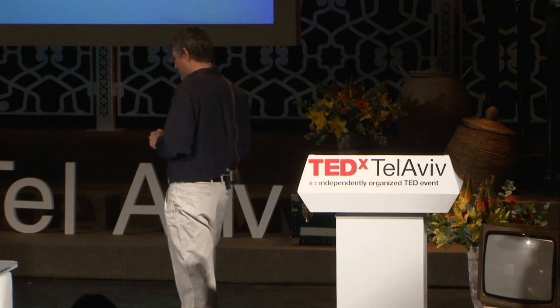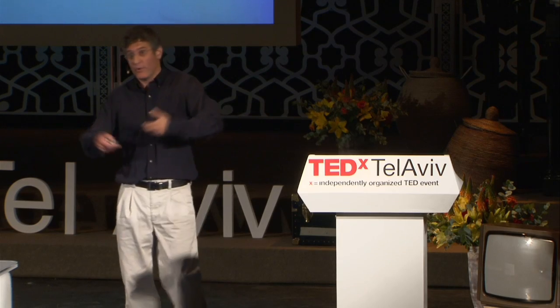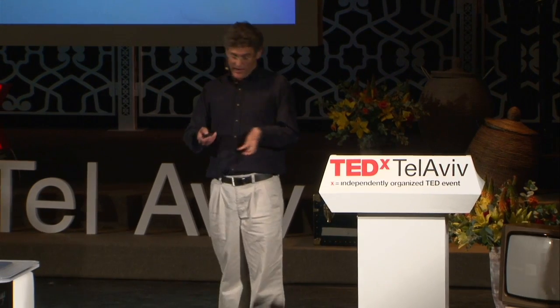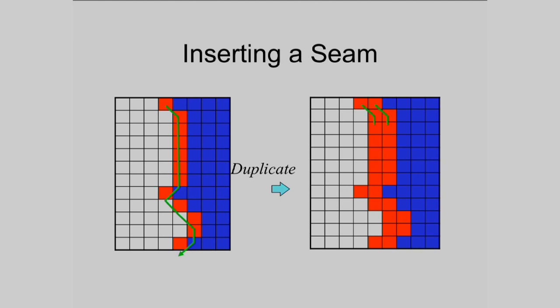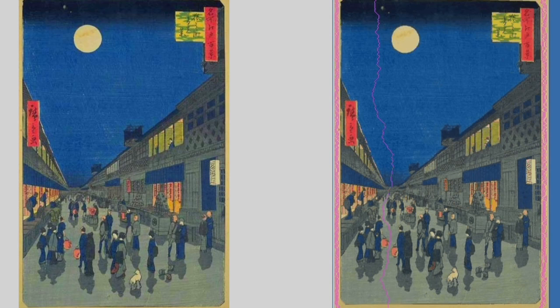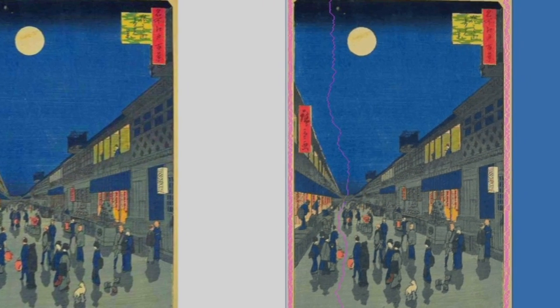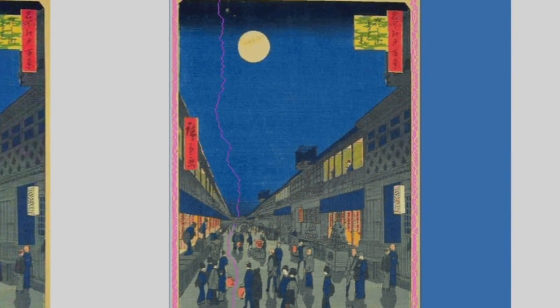I've shown you that we can also extend images, not only shrink them. That's a very simple trick — instead of removing the seams, we duplicate them. We just copy the pixels one by one, and we have an image one pixel larger. Here's an example: you can see an image, and here's the seam. When I duplicate it, you get an image which is one pixel wider. If I continue doing it again and again naively, you get these smearing effects. So instead, we take the order of the seams that we would have removed and duplicate them one by one — and you can see that the content is preserved.